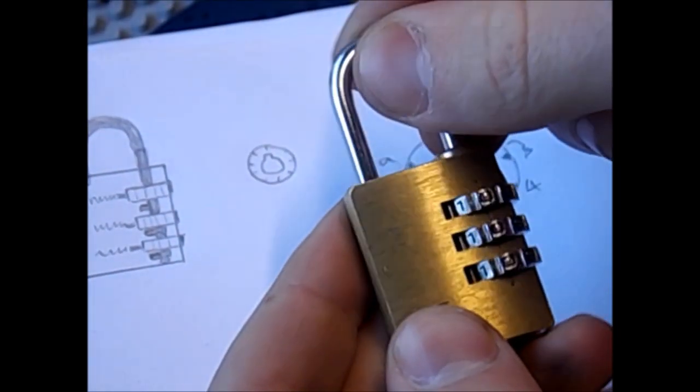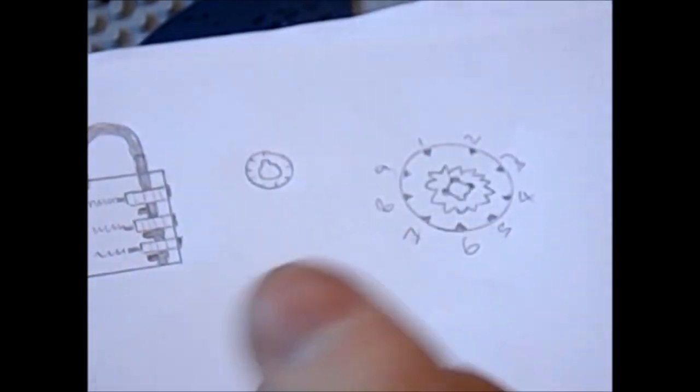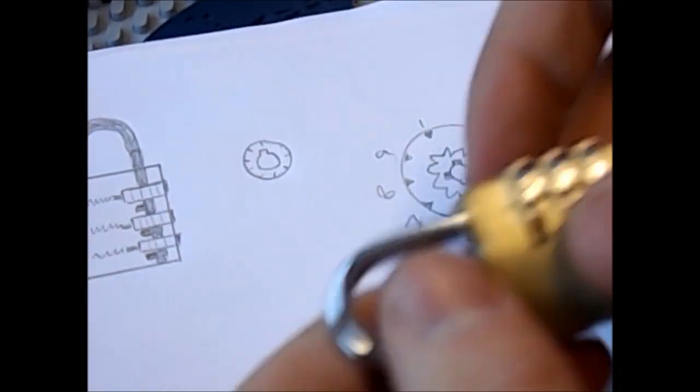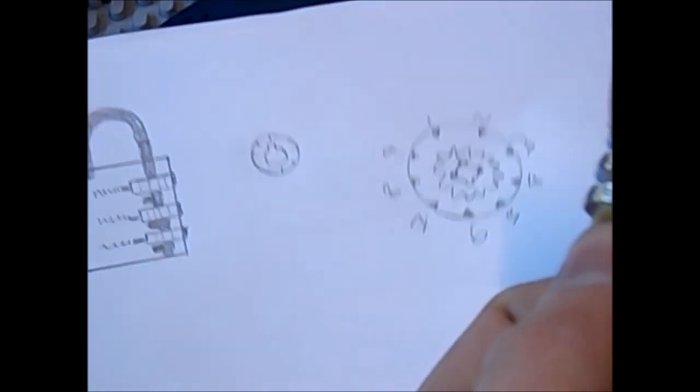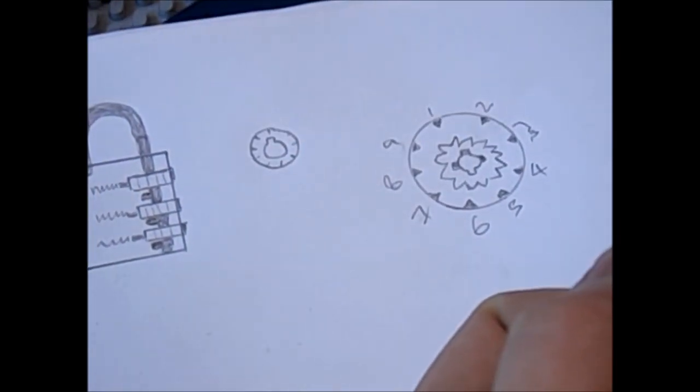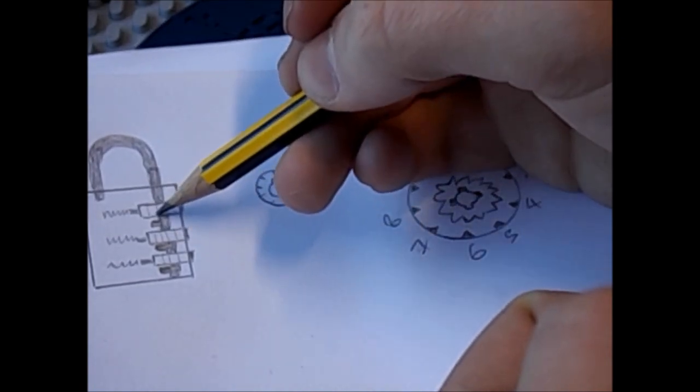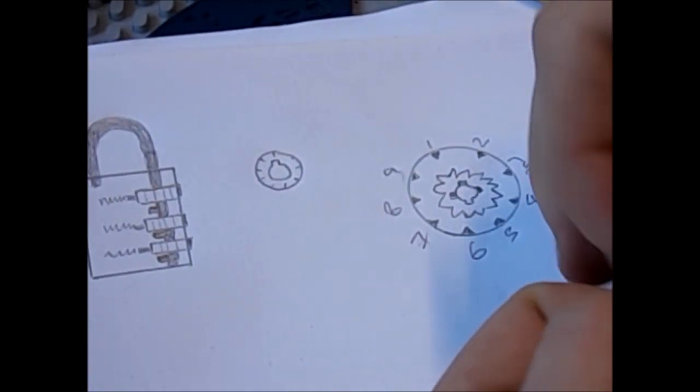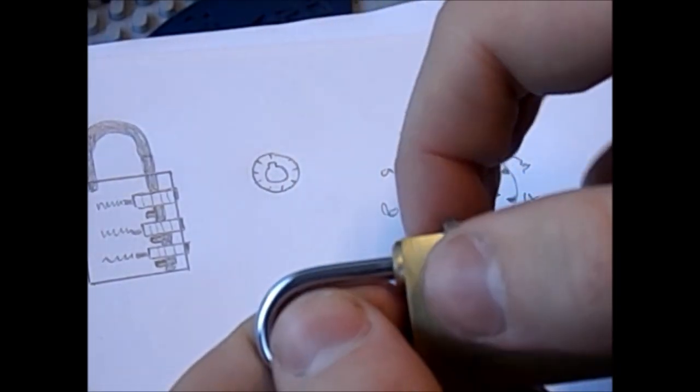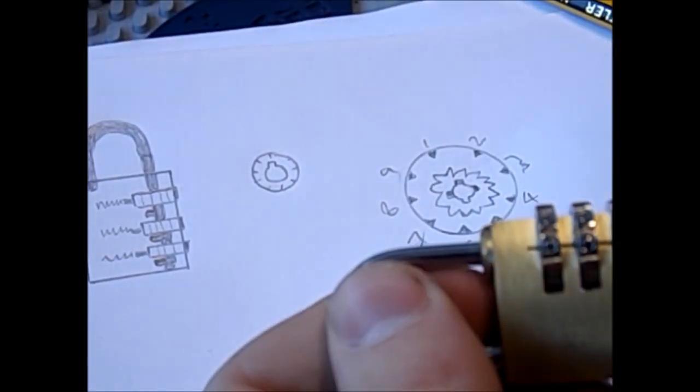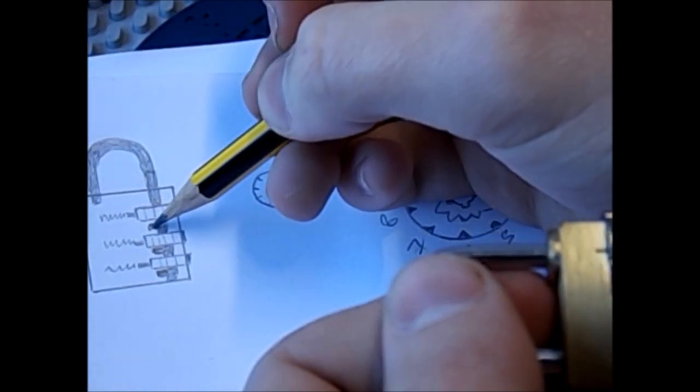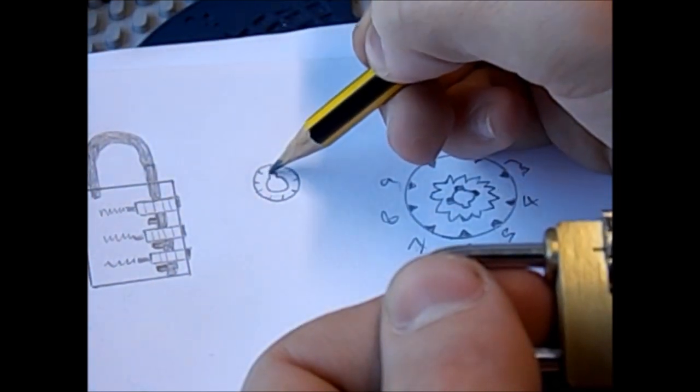So when we usually decode one of these, especially one of these simple ones without false gates in it, we muddle up the combination, and we pull tension on the shackle. And what that does is it causes these teeth to bind against the dials. And when we turn our dials, we turn them until we can feel a click, or hear a click, and the shackle moves out. And that means that our teeth have then popped into this groove here.